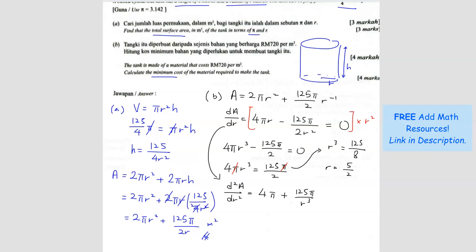We want to find the value when r equals 5 over 2. Substitute this into d squared A over dr squared. It becomes 4 pi plus 125 pi over 5 over 2 cubed. What you get is 12 pi. Since 12 pi is more than 0, therefore this is a minimum area. That's how we prove it's a minimum area, because it's more than 0.